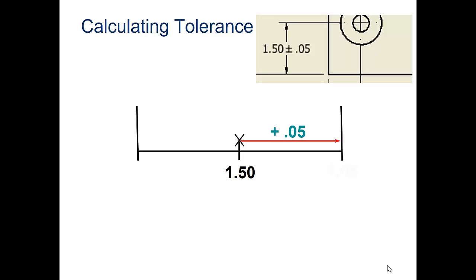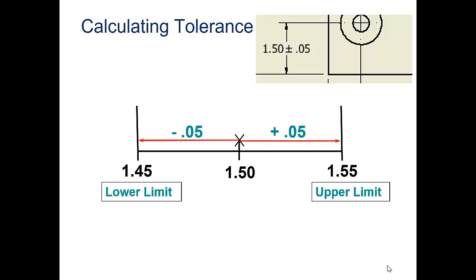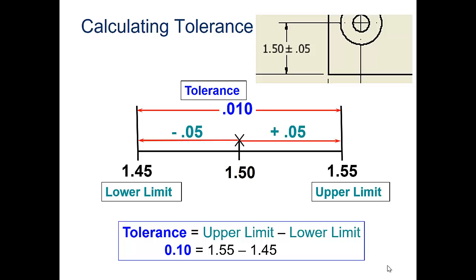Calculating tolerance: you have plus .05, up to 1.55, and minus .05 down to 1.45. Tolerance would be the total allowable tolerance, which should be .1. I'm not sure why they say .01 up here, I just now saw that, but down here this one's correct. This one says .1, and that's the allowable tolerance.